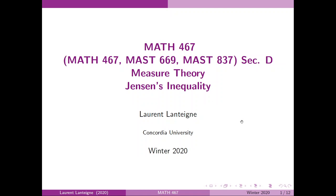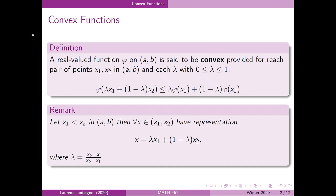Today I'll be doing a short presentation on convex functions and then we'll finish with Jensen's inequality and the following proof. So first let's define what makes a function convex. A real-valued function phi on an open interval is said to be convex provided that for each pair of points x1 and x2 in that open interval and for a lambda between zero and one, we have the following inequality.